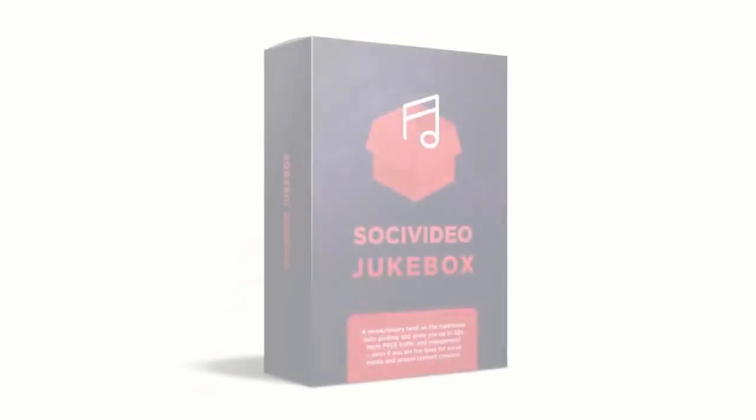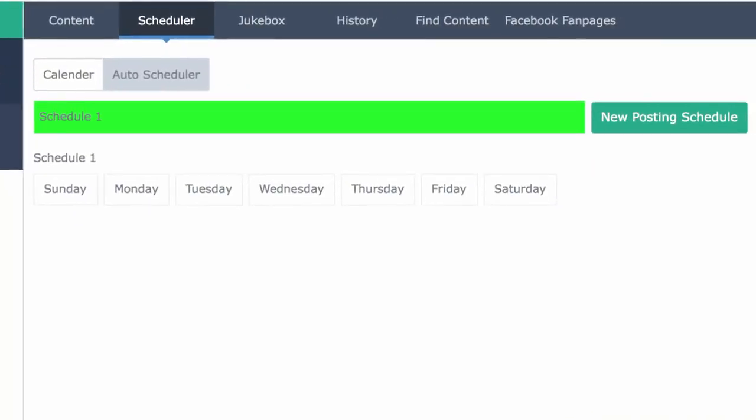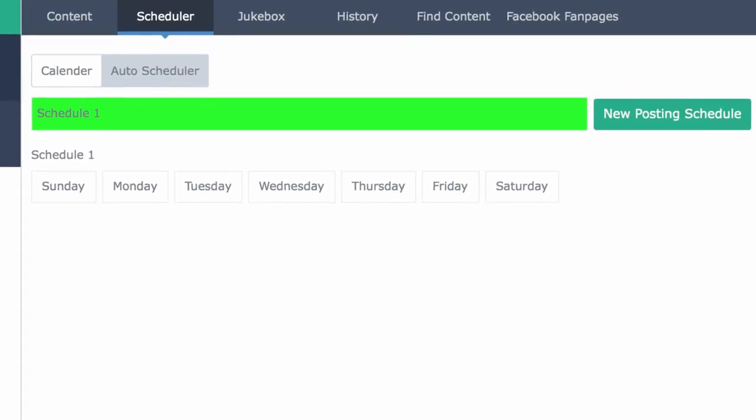But what if there was a much easier way to post content to Facebook daily like a big agency, deliver value, and start getting the traffic and sales you deserve with far less work? Well, now you can with SociVideo Jukebox. Dominate social media and video marketing with the first non-stop automatic smart posting machine. Let me show you how it works. SociVideo Jukebox is a groundbreaking, modern scheduling and curation app that's going to pull targeted leads and sales for your business on complete autopilot from Facebook and Twitter and help your brand deliver immense value in the process.